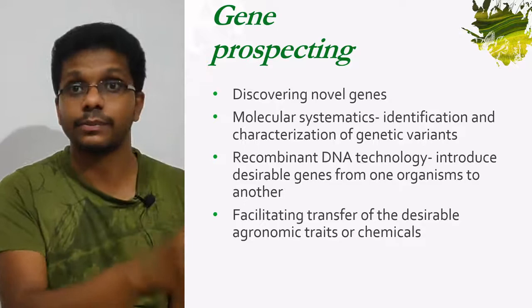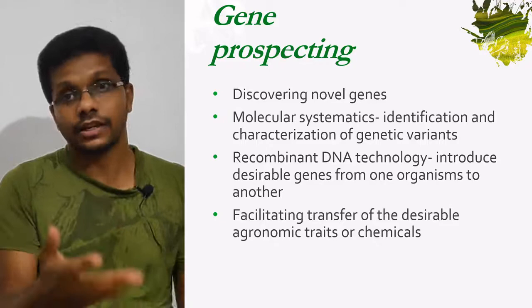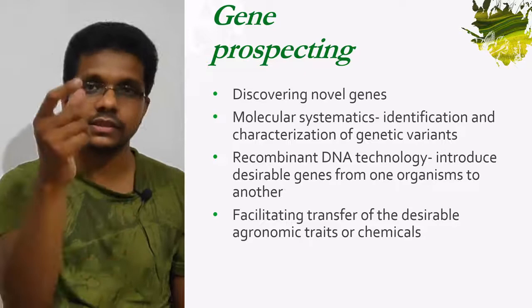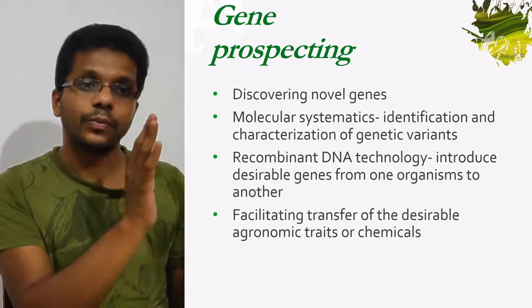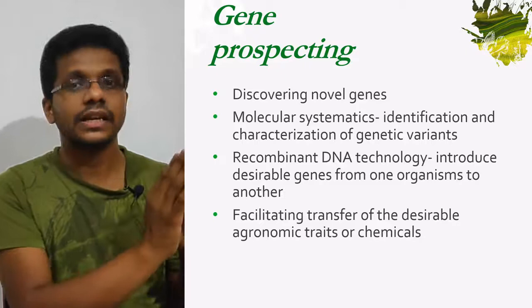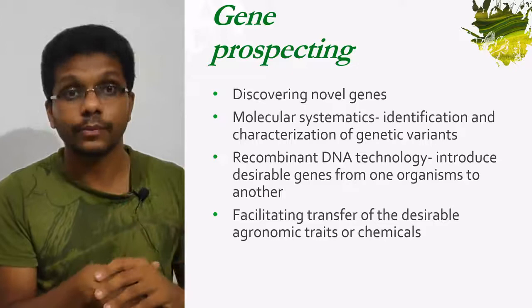You can take a gene from bacteria and put it in a plant, or you can put genes from humans inside E. coli. Humans are doing it for many pharmaceuticals like insulin. The gene which encodes insulin can be transferred from humans into E. coli for the industrial production of insulin, which is used for the treatment of diabetes. The advancement of molecular systematics and the flexibility provided by recombinant DNA technology for transferring genes between organisms leads to the increased importance of gene prospecting.